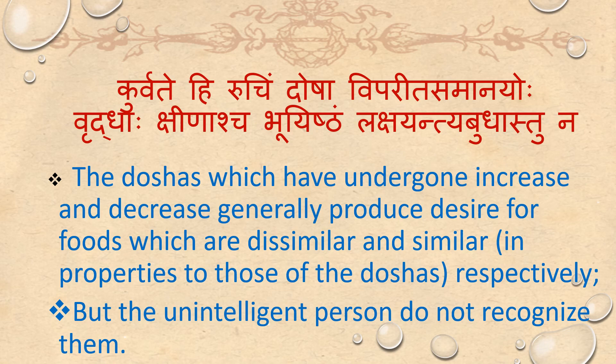Kuruved, Dosha Vibaridha, Samanayohu, Vriddhaha, Shinascha, Bhuyishtam, Lakshayendi. Doshas which have undergone increase and decrease generally produce desire for foods which are dissimilar and similar in property to those of the Dosha respectively. But the unintelligent person could not recognize them.